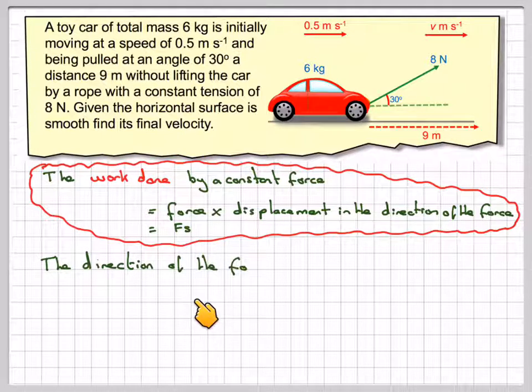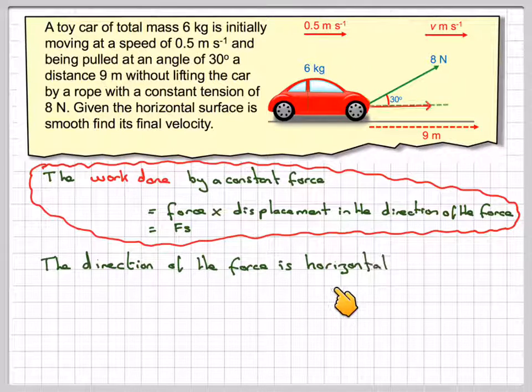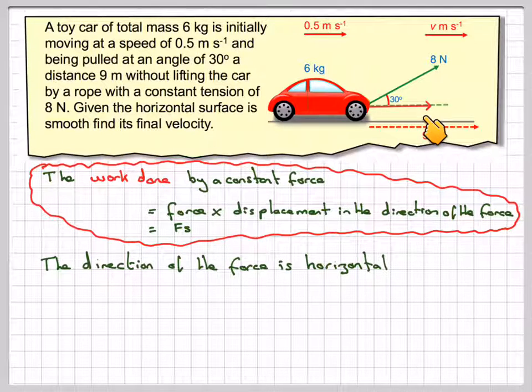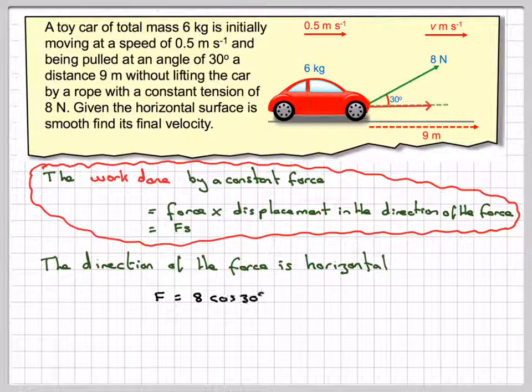Now the direction of the force is horizontal, i.e. it's going to be this distance here, this force here which is going to be 8 cos 30 degrees. So the force is 8 times cos 30 degrees.